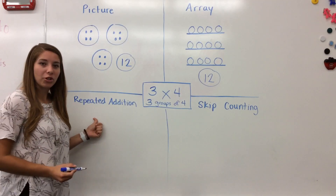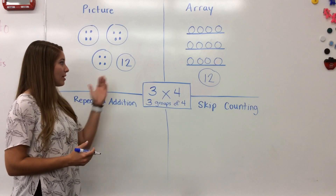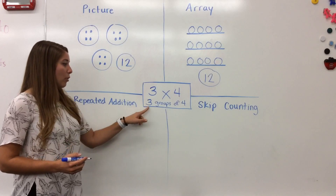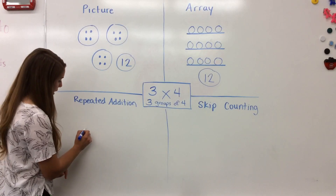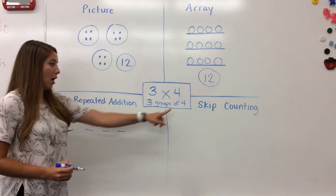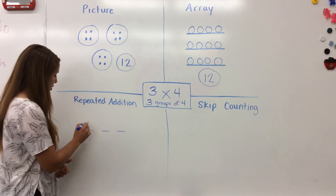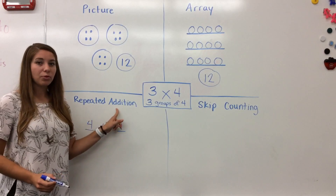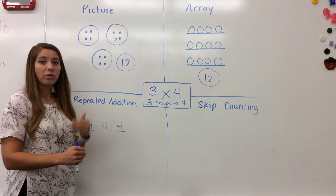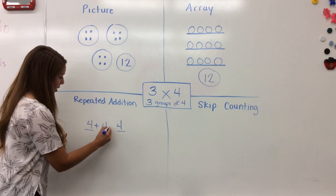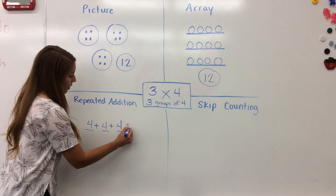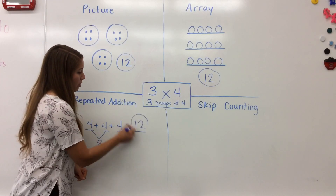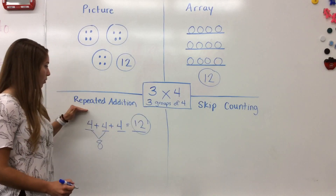The next strategy I'm going to show you is repeated addition. This works the same way as the other strategies — since multiplication means finding the total of equal groups. I'm going to create my three groups by drawing three underlines, and on each line I'm going to write the number four: four, four, four. The name of this strategy is repeated addition, meaning I add the same number over and over. So four plus four plus four — when I add four plus four I get eight, and eight plus four more equals twelve. There's the answer to three times four using repeated addition.